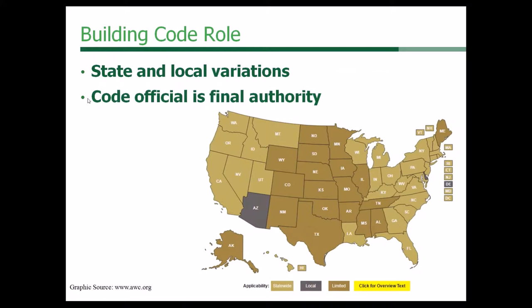Being in touch with your code officials and ensuring a good understanding of what's expected or required in local jurisdictions is important. This map gives a sense — it's different from the ICC code adoption maps in that it not only shows where there are statewide adoptions of certain codes, but any local adoptions and limited adoptions. If you click on it, it'll give more details for specific variations related to wood products. We're trying to build that database and provide that information for designers and code officials.